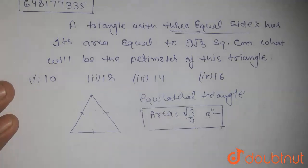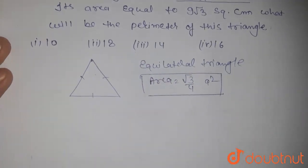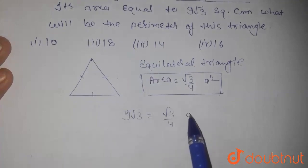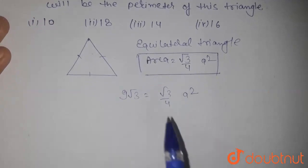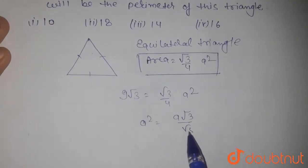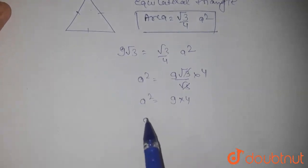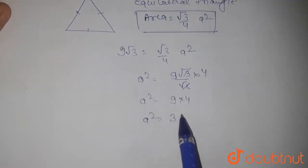Where a is the side. The area given is 9 root 3 equal to root 3 by 4 a square. Then a square will be 9 root 3 divided by root 3 multiplied by 4. Root 3 cancels out, so a square equals 9 multiplied by 4. Then a square value is 36.